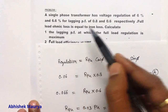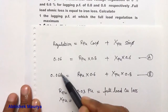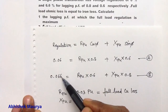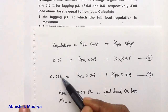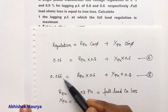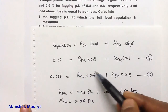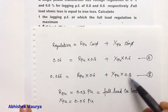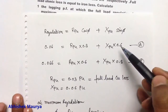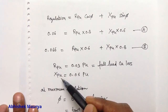The voltage regulation is 6.6% at a lagging power factor of 0.6, so this is 0.066 per unit at a power factor of 0.6. If you know the value of cos(phi) you can find out the value of sin(phi). This is equation number B. If you solve these two equations you will get the value of R per unit and X per unit.